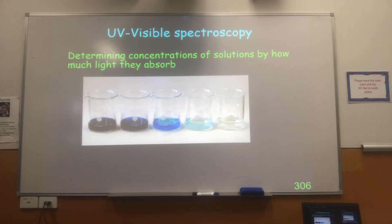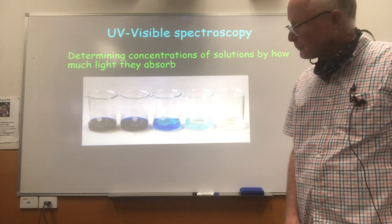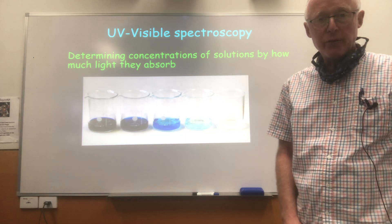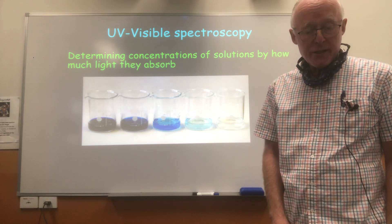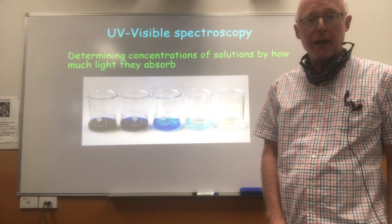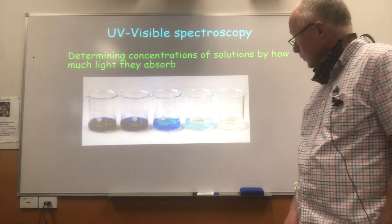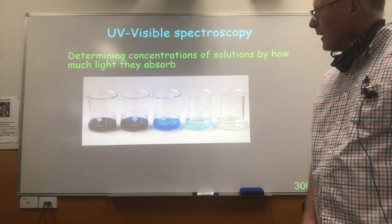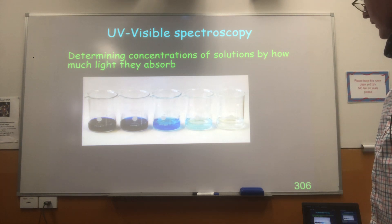Now we're looking at instrumental analysis in modern analytical chemistry. These days, not much chemical analysis is done using the old-fashioned methods of titration and gravimetric analysis. Almost all of it's done using high-tech equipment and automated processes. And we're looking now at a few of those different techniques. The first of them is ultraviolet visible spectroscopy, UV-Vis, going through the basic principles that this technique uses.